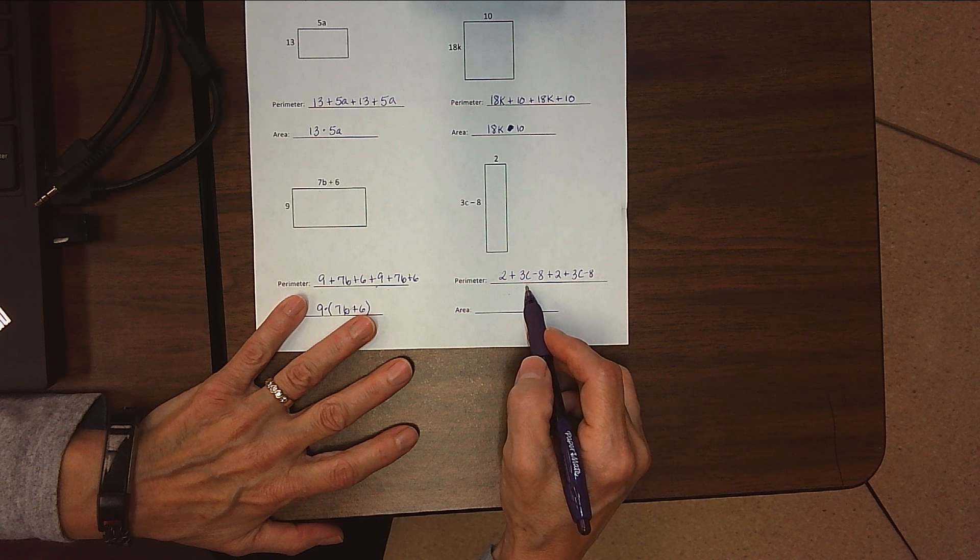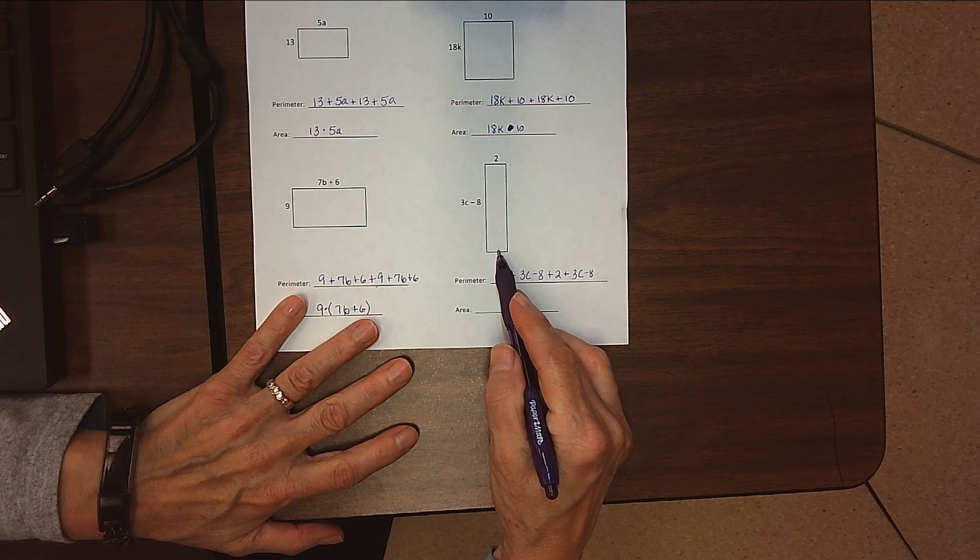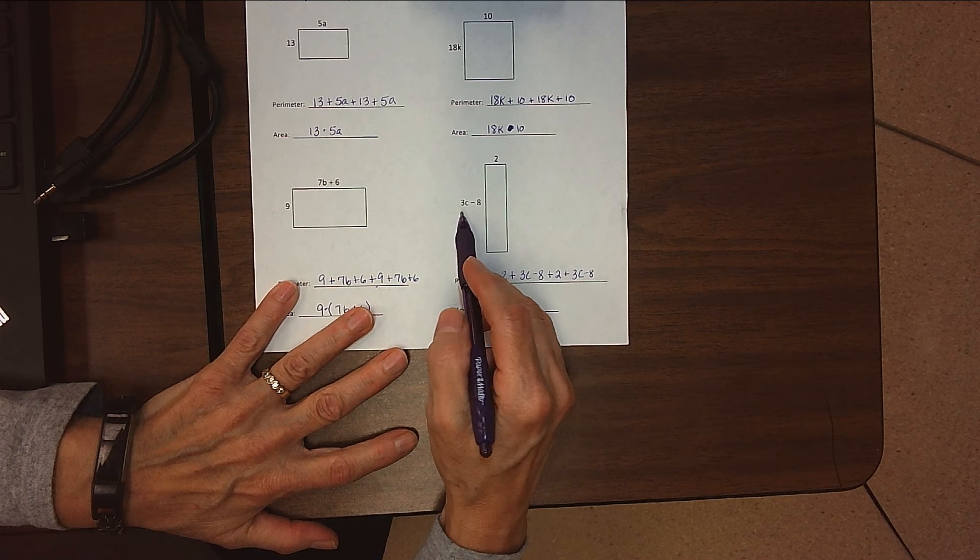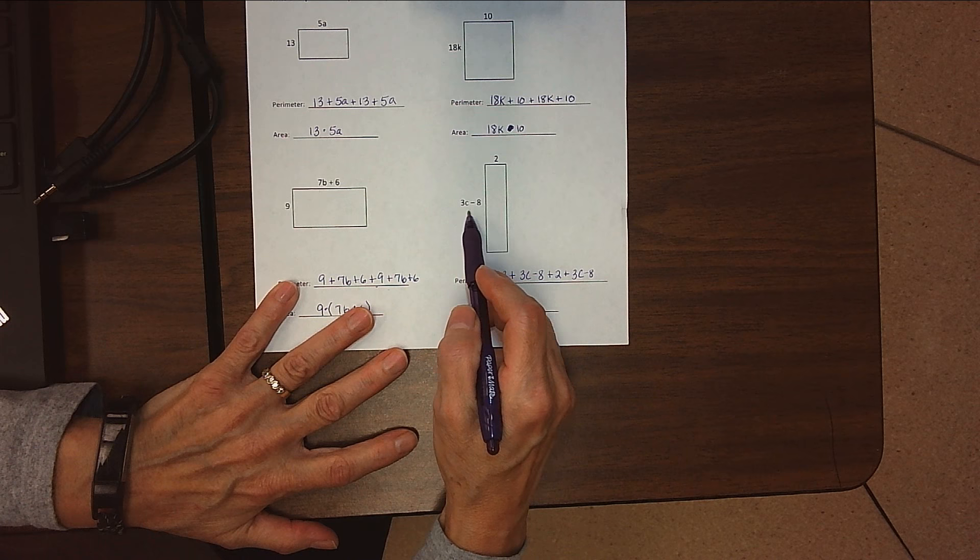You do need to leave the 3c minus 8 in that order. You can't change that—that's got to stay the way it is. Then finally for our area, we're going to use parentheses because of our order of operations.